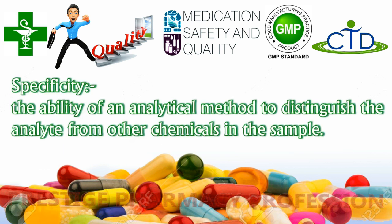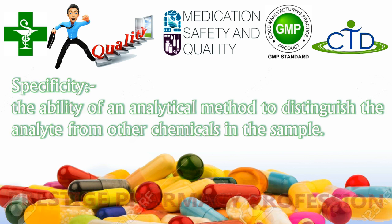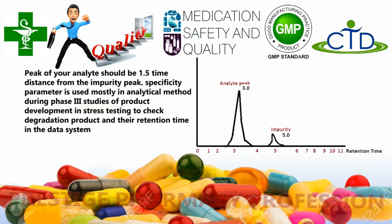Specificity is the characteristic of a validation method in which we check the peak-to-peak difference in retention time within the same sample. We also check the analyte with respect to other impurities present in the sample. For example, if the analyte retention time is three minutes in the chromatogram, an impurity is added to the sample to check whether it gives a separate peak at a different retention time or whether it mixes with the analyte peak.